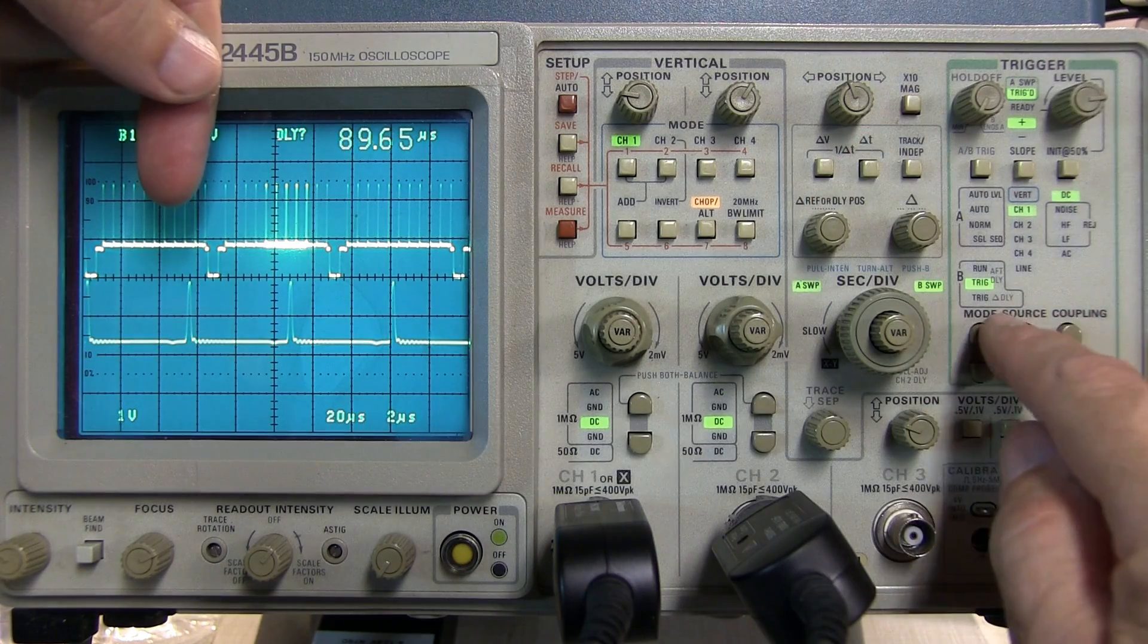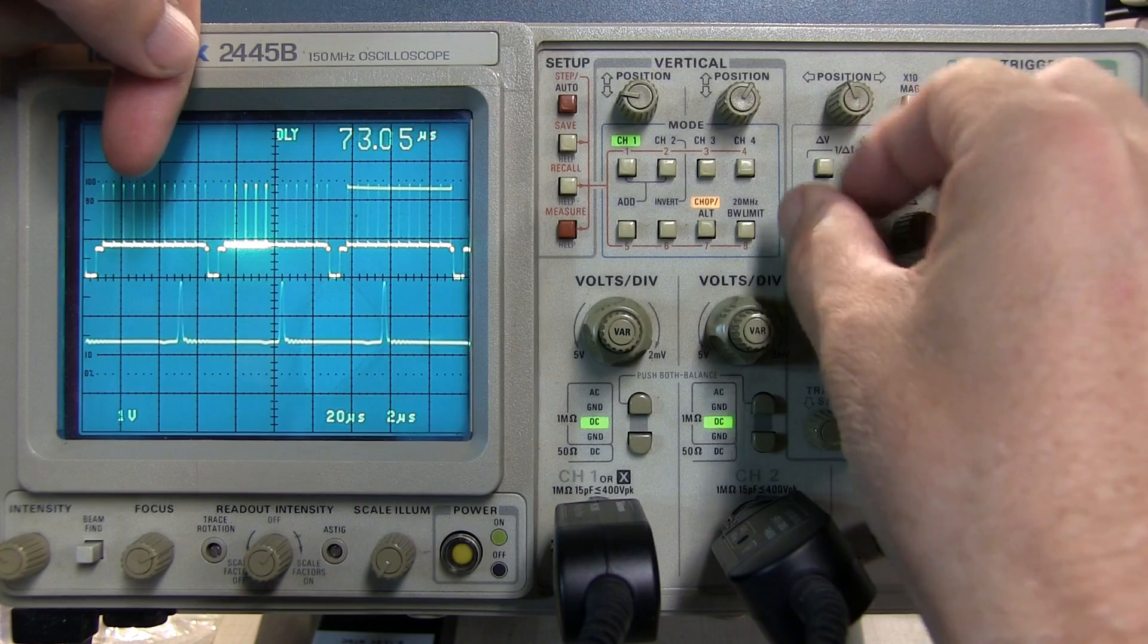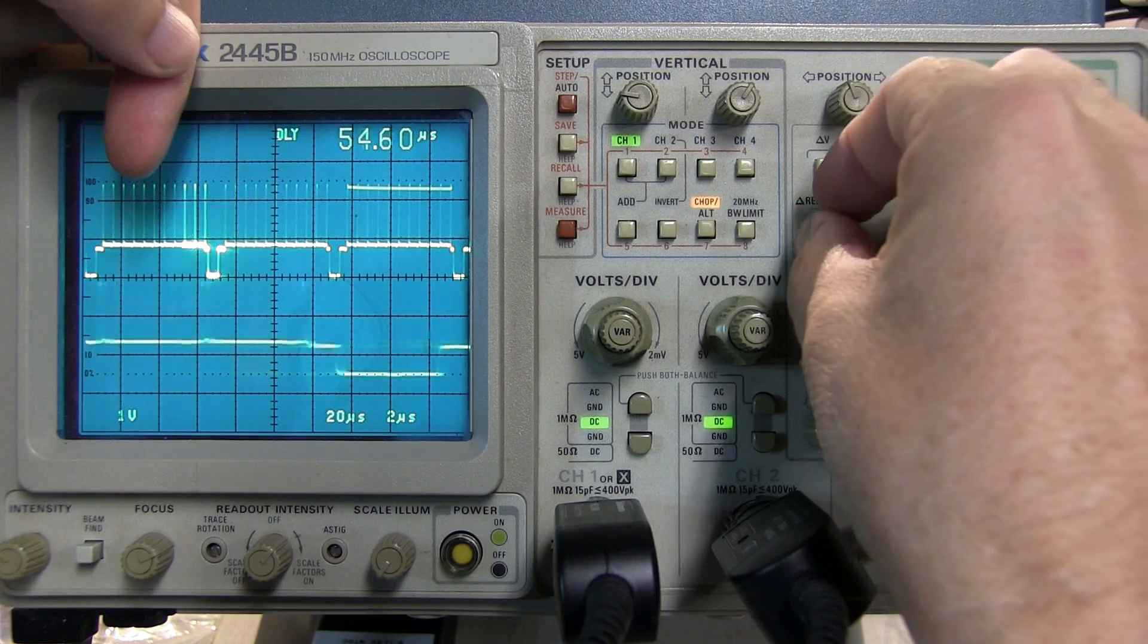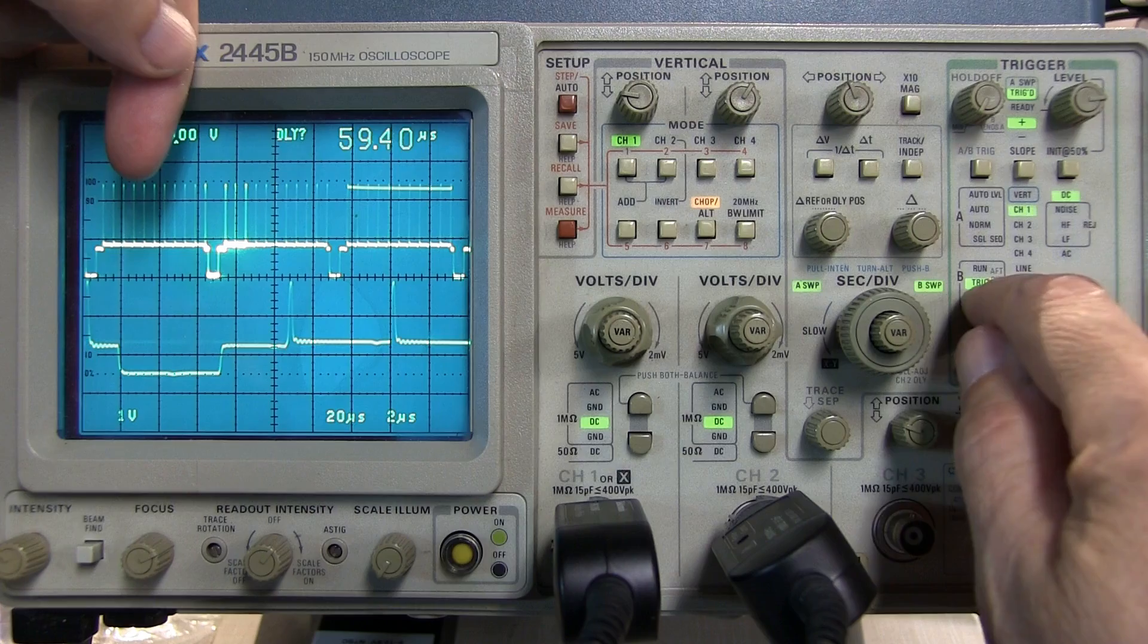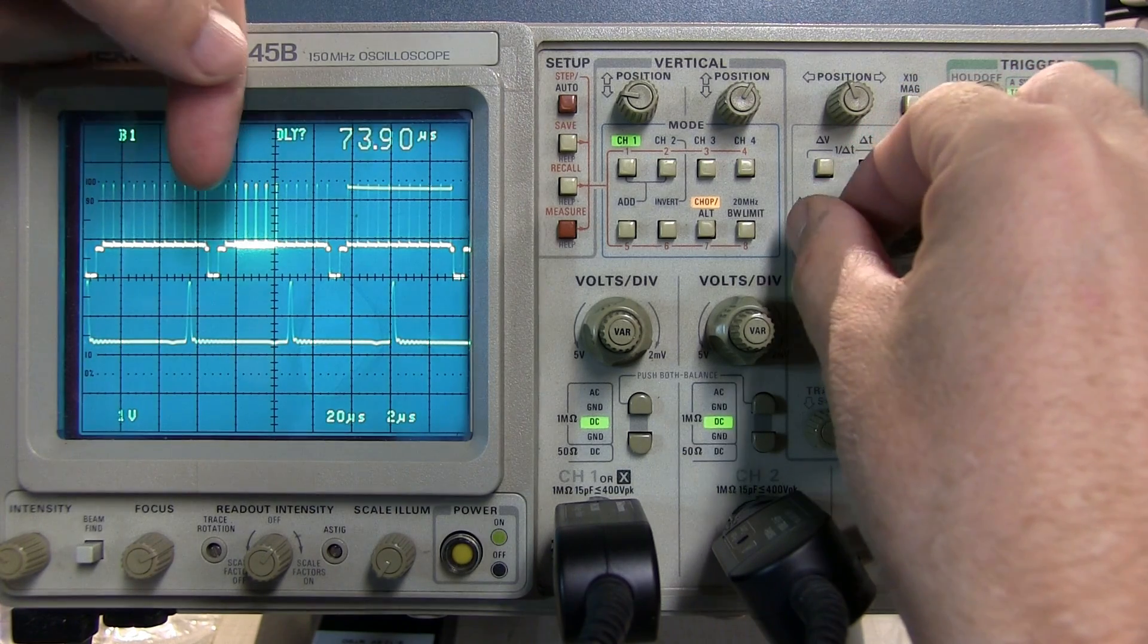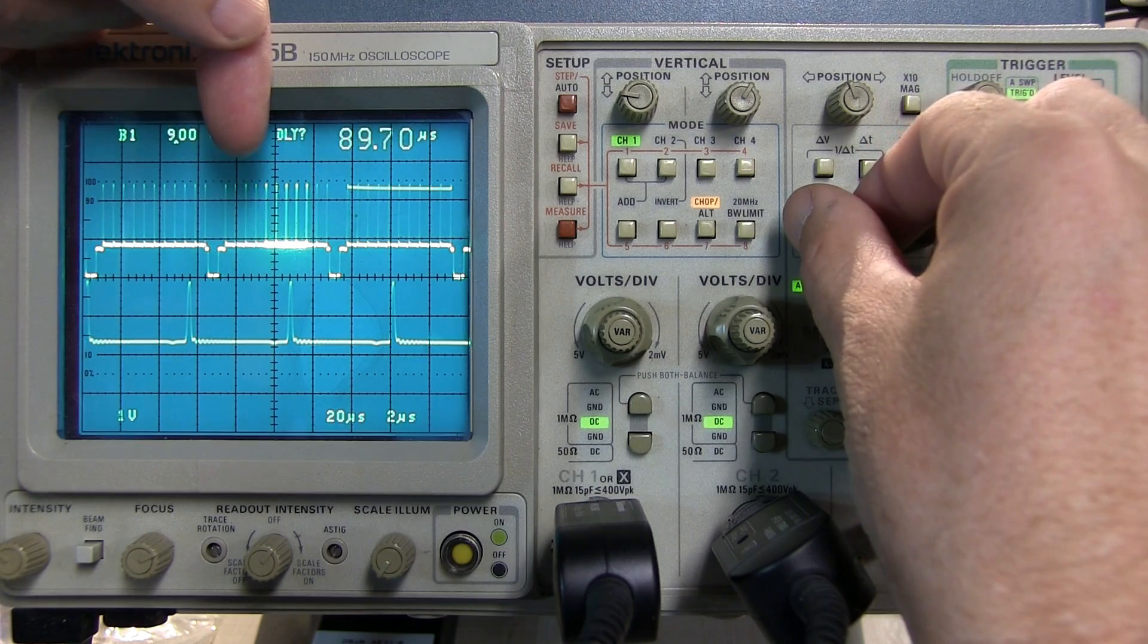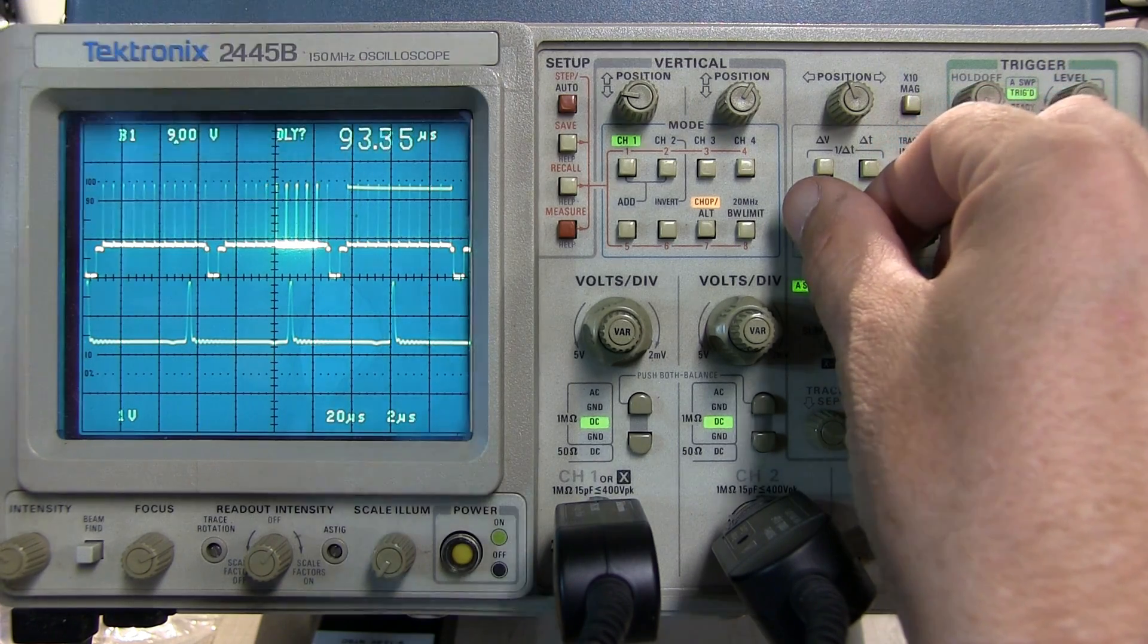So unlike the run after delay where I can smoothly move the delay back and forth, the trigger after delay will cause the B time base to be triggered after the delay. So we're finding the first triggerable event in the waveform after the delay setting.